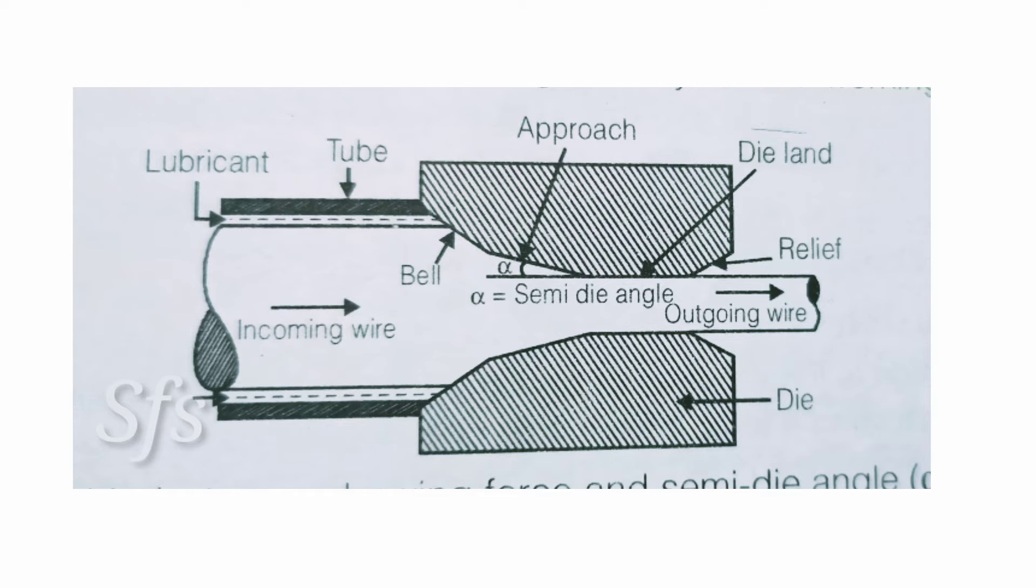So the wire comes, and firstly the cross-section area is reduced by the bell area. Then, due to the approach angle and inclination, it decreases. A uniform area or die land, which is equal to the outlet diameter of the wire, is provided. After that, a relief is provided.